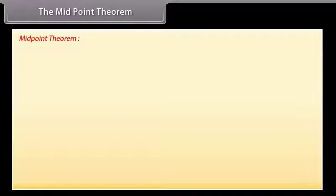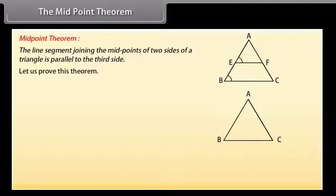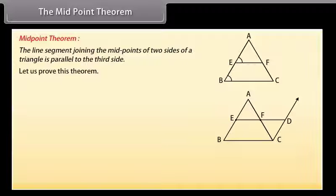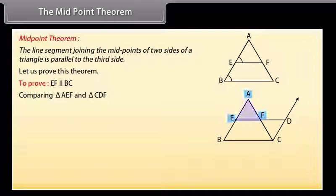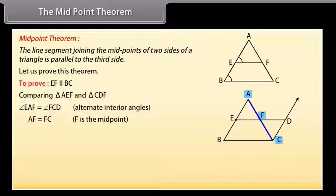The midpoint theorem states that the line segment joining the midpoints of two sides of a triangle is parallel to the third side. Let us prove this. Draw triangle ABC. Mark E as the midpoint of AB and F as the midpoint of AC. Draw line CD parallel to AB, intersecting extended EF at D. We have to prove EF is parallel to BC. Comparing triangle AEF and triangle CDF: angle EAF = angle FCD (alternate interior angles), AF = FC (F is the midpoint), and angle AFE = angle CFD (vertically opposite).